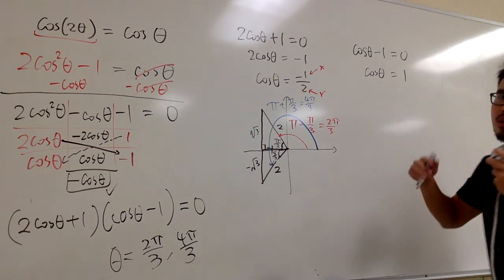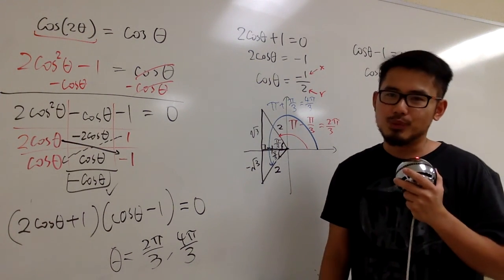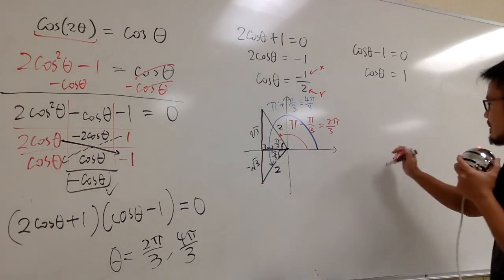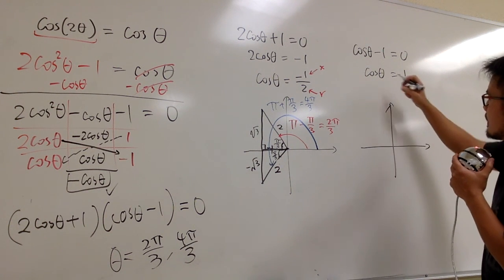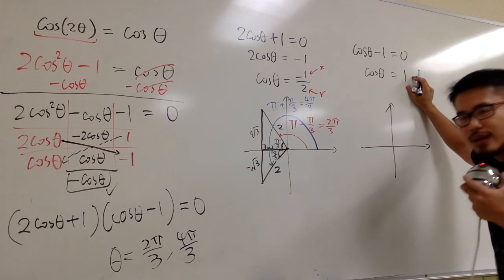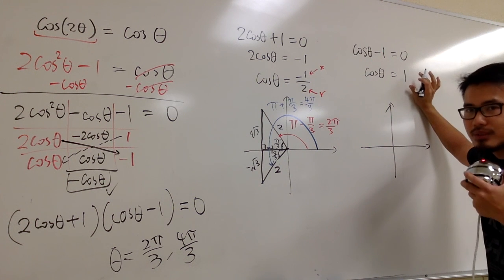This one, cosine θ is equal to 1. Cosine of what angle will be 1? Well, let's utilize the unit circle again. This is a situation that we don't really have a triangle. It's a special value. Cosine θ is equal to 1.